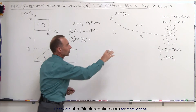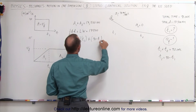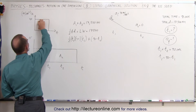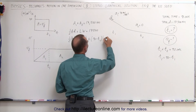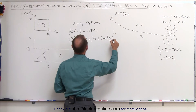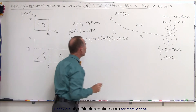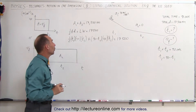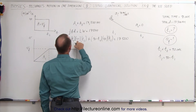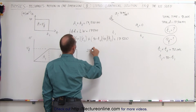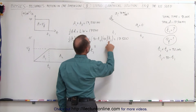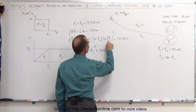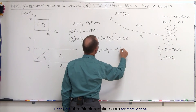Since t2 equals 90 minus t1, we substitute that in: one-half times t1 times 40t1, plus (90 minus t1) times 40t1, all equals 17,500. Expanding: one-half times 40 is 20, giving 20 times t1 squared, plus 40t1 times 90 which is 3600 times t1, and 40 times negative t1 times t1 gives minus 40t1 squared, equals 17,500.